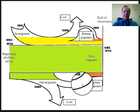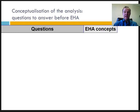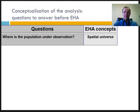Now we come to the crux of this lesson on concepts of event history analysis. We introduce here a series of six questions that you should always answer before starting any event history analysis on any kind of longitudinal data. Each question corresponds to a specific concept in event history analysis. Although we have talked a lot about time at risk in preceding lessons, the very first question to answer is about space: Where is the population under observation?